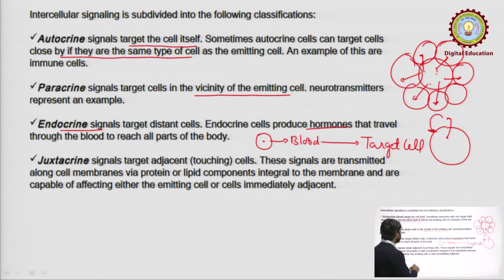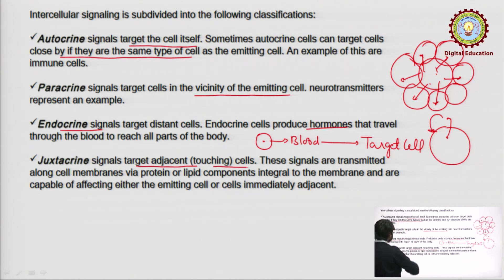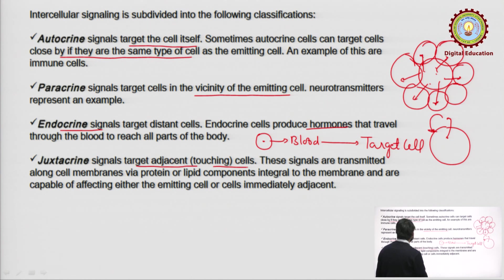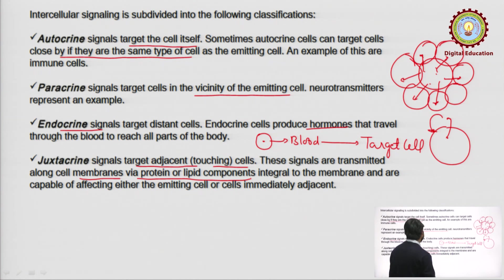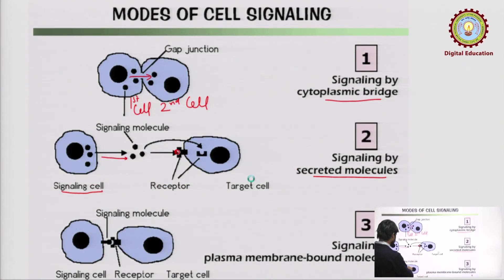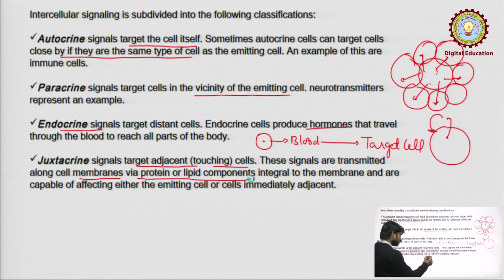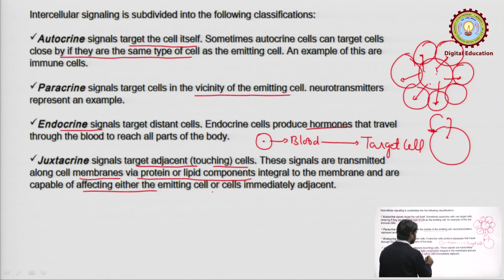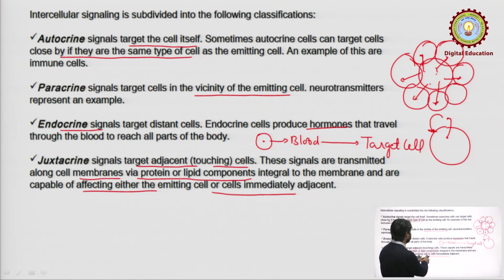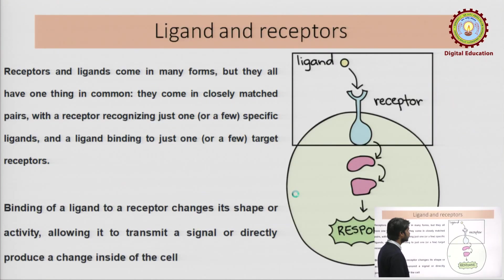The next is juxacrine signaling. In juxacrine signaling, it targets adjacent or touching cells. It is more like autocrine, but in autocrine we have the same type of cell, whereas in juxacrine the cell can be different. These signals are transmitted along the cell membrane via protein or lipid components integral to the membrane. It affects either the emitting cell or the cell immediately adjacent to it.